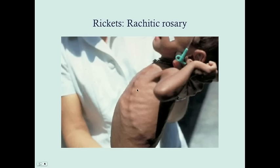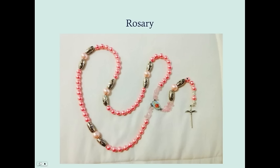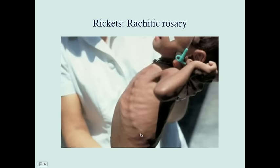This is the rachitic rosary — it's just costochondral swelling, and they look like little beads on the chest. Here's a slightly more discreet example. It gets its name from the rosary, which are prayer beads used by Christians. You can see it looks like beads on the chest — that's where the name comes from.